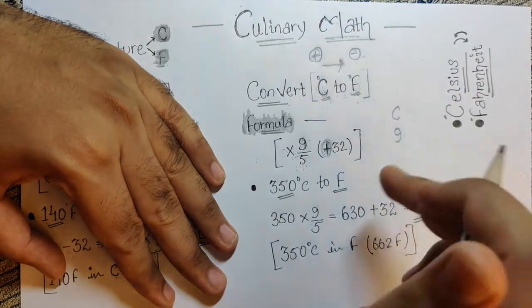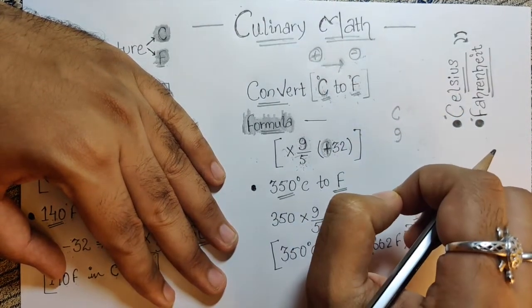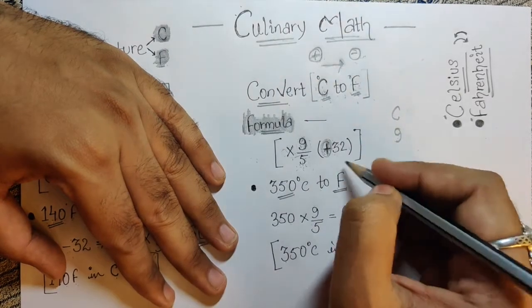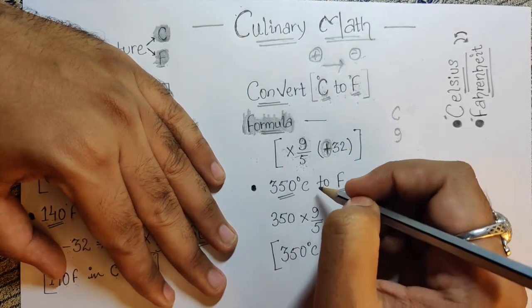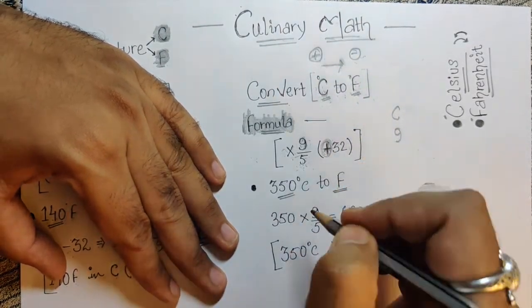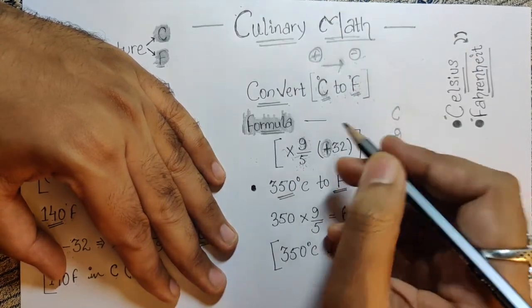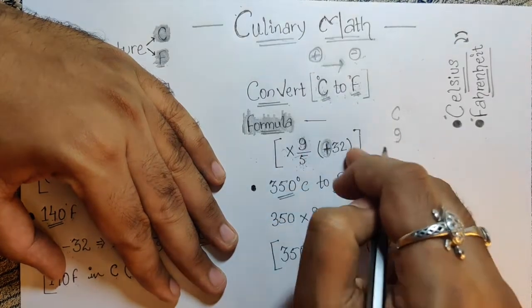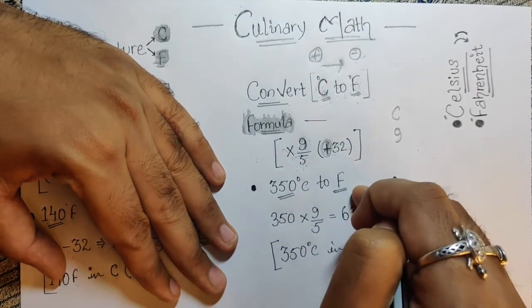You know that Celsius and Fahrenheit conversions are so important. When we do recipes, there are temperature charts - ovens use Fahrenheit or Celsius depending on the equipment. If you're using different ovens, you need to know how to convert between the two.